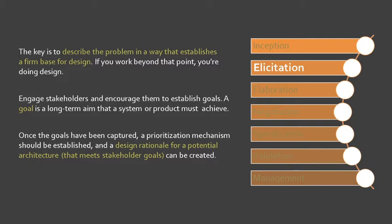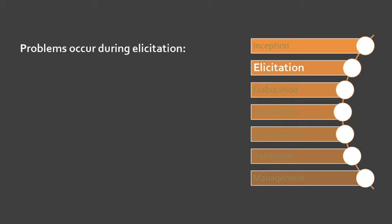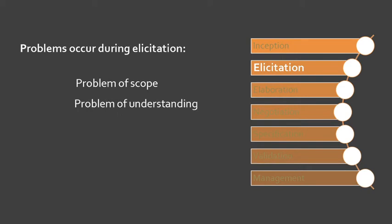We also need to discuss the problems that will occur during the elicitation. First, we have the problem of scope. The customer gives unnecessary technical detail rather than clarity of the overall system objective. We also have the problem of understanding — poor understanding between the customer and the developer regarding various aspects of the project, like capability limitations of the computing environment.